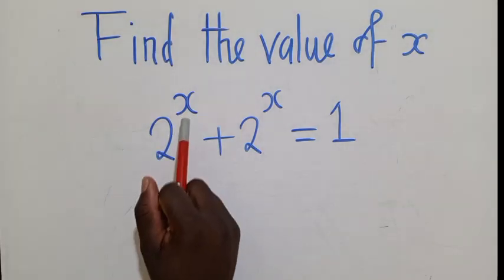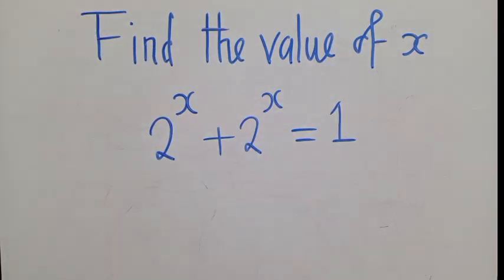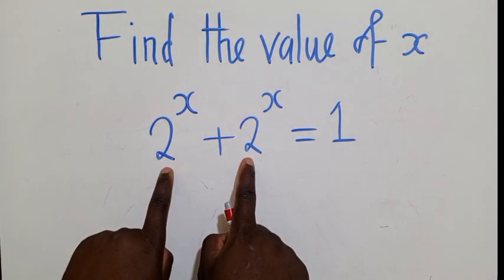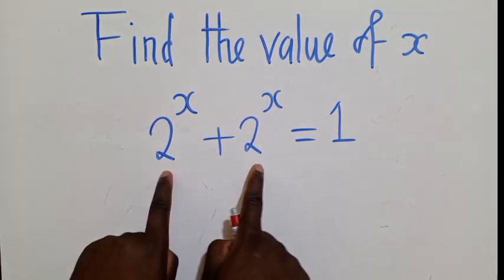You can see we have 2 power x plus 2 power x is equal to 1. So how do we get to find the value of x in this case? The most important thing must be to check this side. Do we have the similar terms?